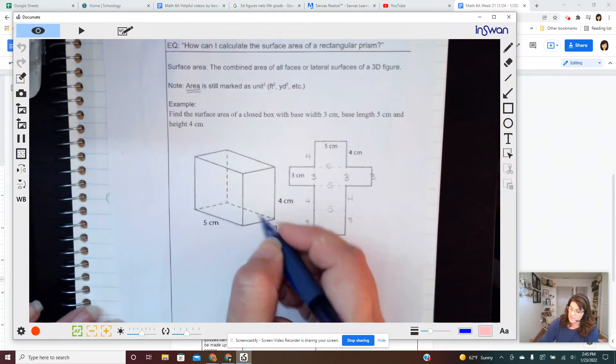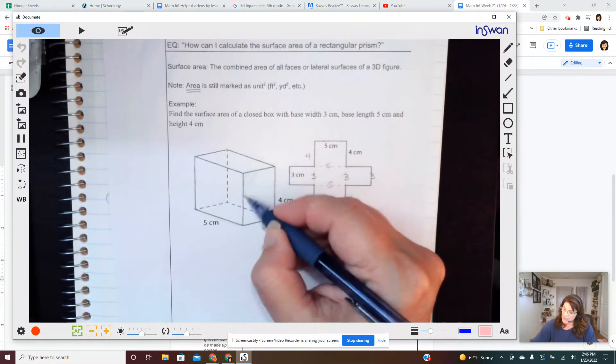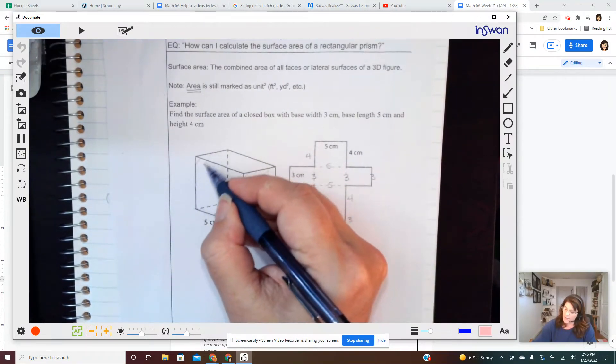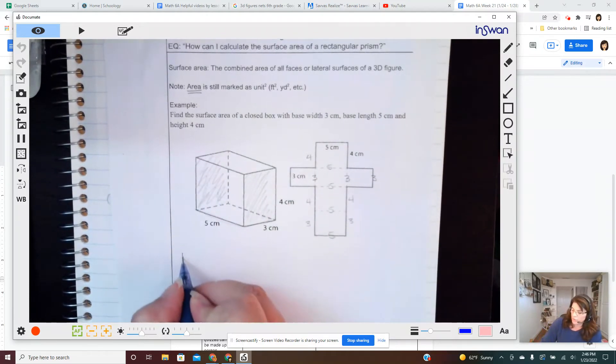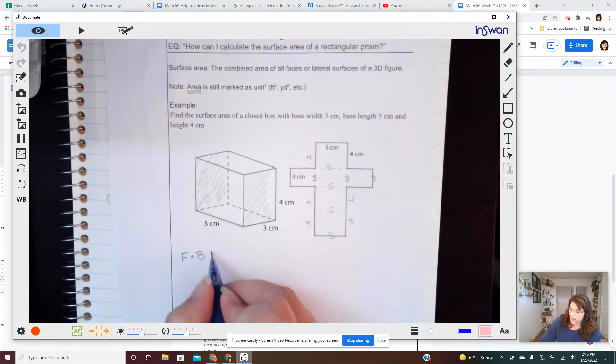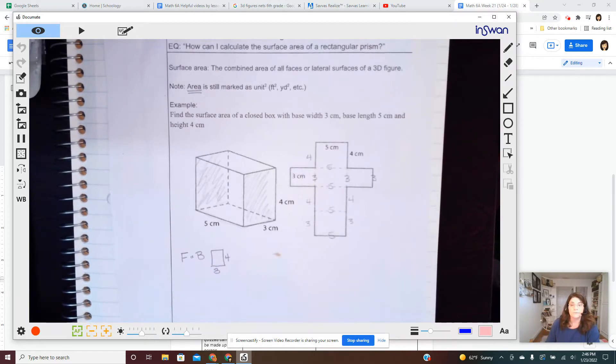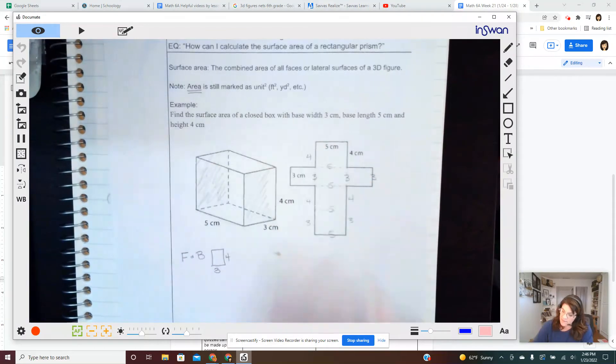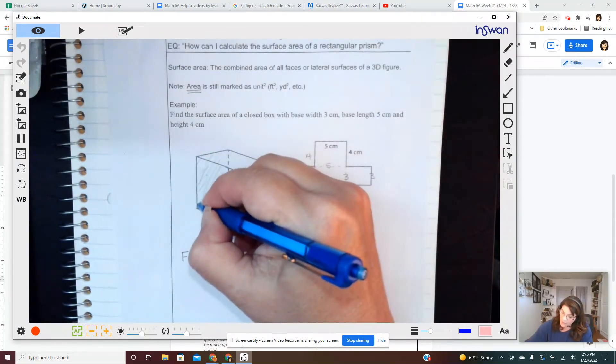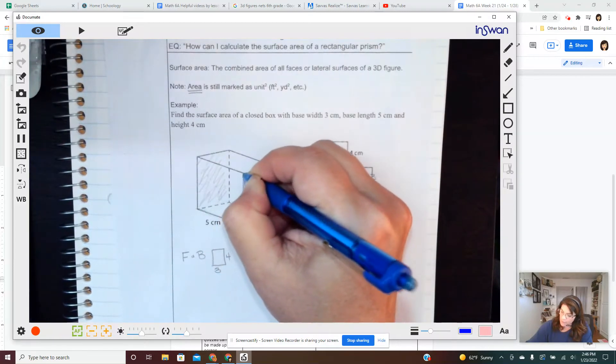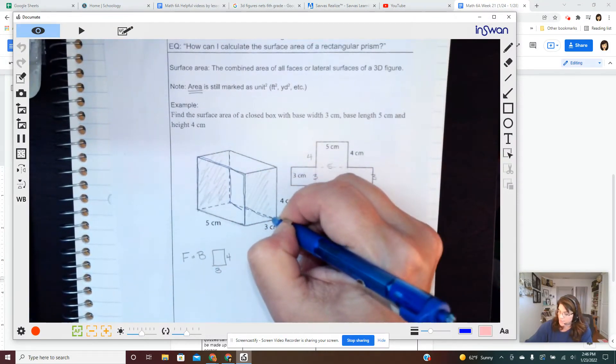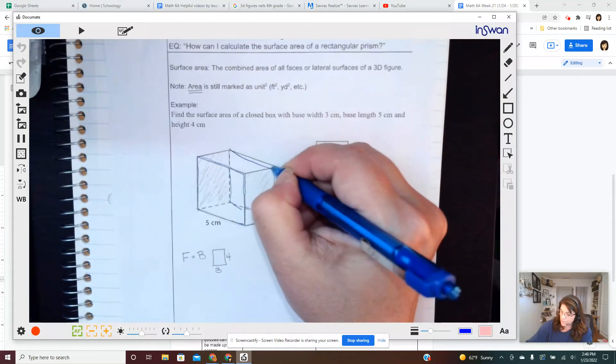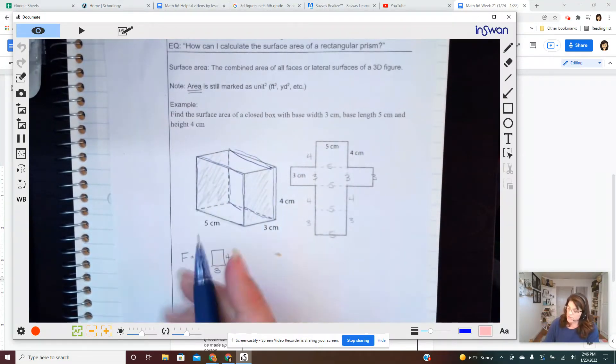So if I consider this part, and I'm just going to kind of shade in right there, and it's matching back. If I consider that to be front and back, I know those rectangles are three by four. Then, if I had sides, which I'm going to outline right here. Sides. And again, the opposite side.